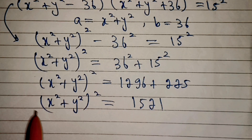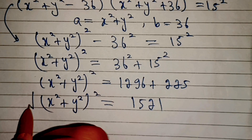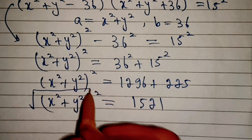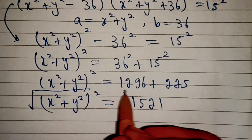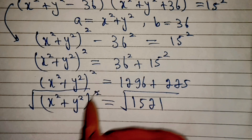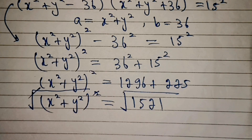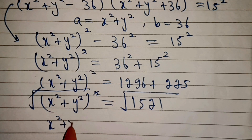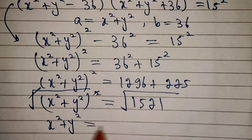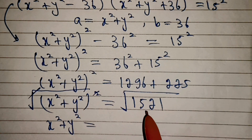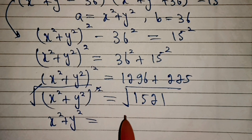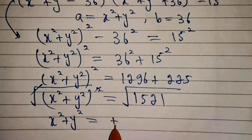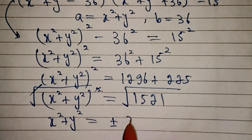Now we'll apply square root on both sides. The square and root cancel out, giving x squared plus y squared equals plus or minus 39. The square root of 1521 is plus or minus 39.